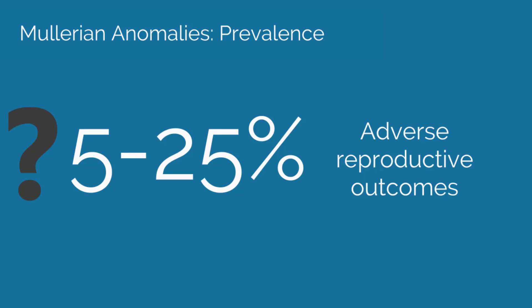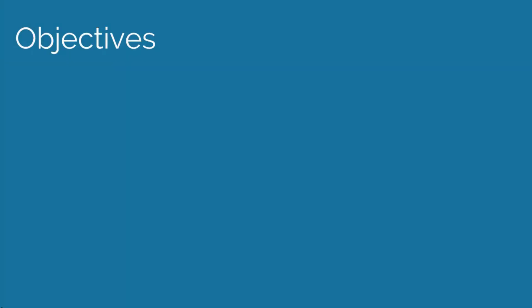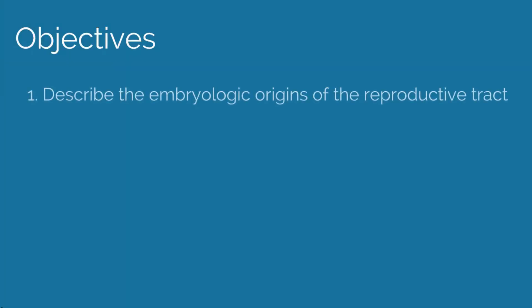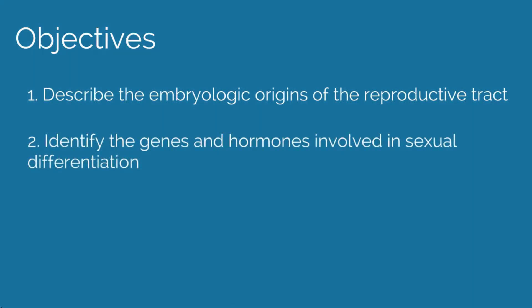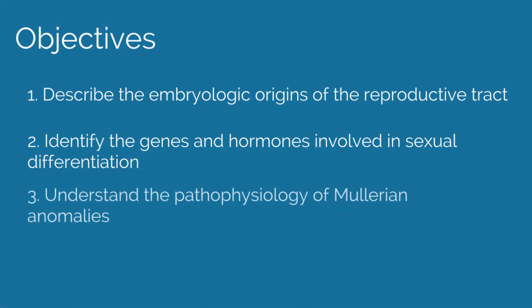Müllerian anomalies have a wide range of impact on women and can affect a woman's obstetrical outcomes. The objectives of this video are to describe the embryologic origins of the reproductive tract, identify genes and hormones involved in sexual differentiation, and to understand the pathophysiology of Müllerian anomalies.